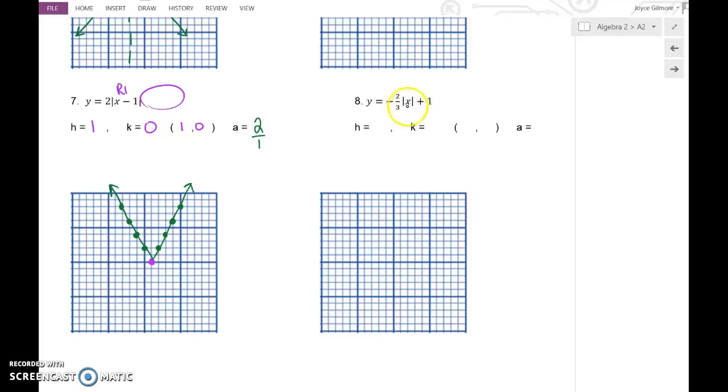Number 8. Notice there's nothing else inside the absolute value bars but the x. That means x is not being added or subtracted to. So no side-to-side movement whatsoever. Outside of the absolute value bars, we've got a plus 1. That means up 1. So our vertex is at the point 0, 1.